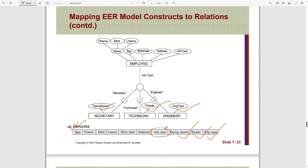This is the type attribute, the attribute which will identify the type of job the employee does. If an employee is a secretary, technician, engineer, or maybe all of them, or maybe none of them, can be known with the help of this Job Type attribute.